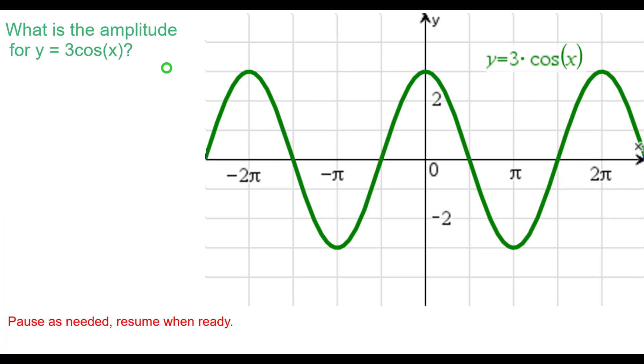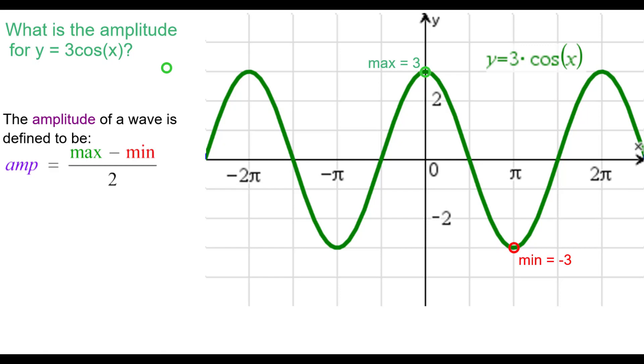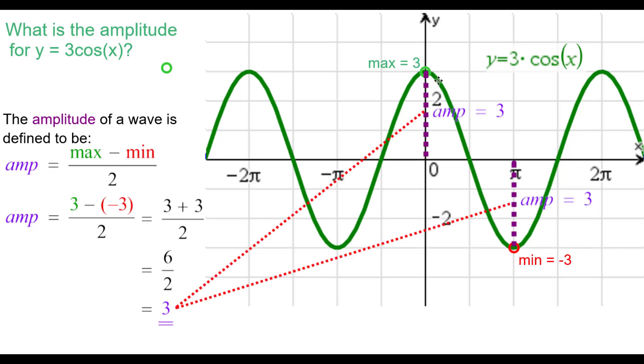What is the amplitude for y equals 3 times the cosine of x? The amplitude of a wave, again, is defined to be max minus min divided by 2. So the max is 3, the min is negative 3. Subtracting those, we'll get a positive 6, and then divide by 2 is 3. So the amplitude is 3. It's also the distance from the max to the line containing the points of inflection, which is along the x-axis.